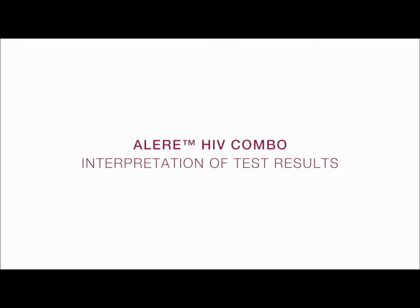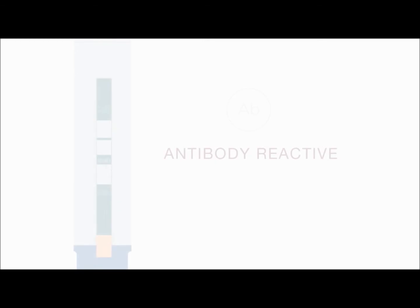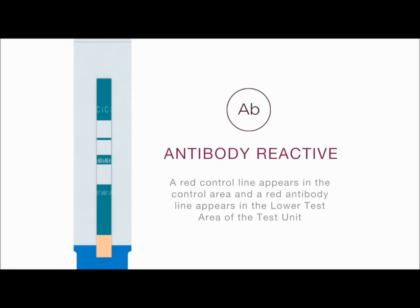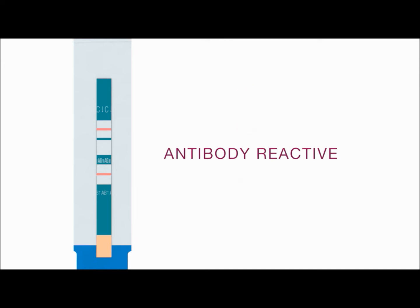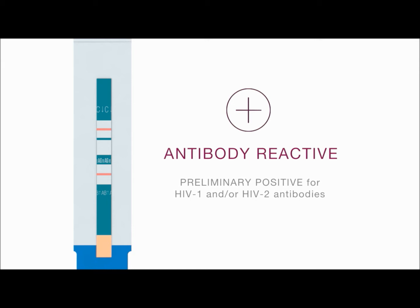Interpretation of test results. Antibody reactive: a red control line appears in the control area and a red antibody line appears in the lower test area of the test unit. The intensity of the antibody and control lines may vary. Any visible red line in both the control and lower test areas, regardless of intensity, is considered reactive. A reactive test result means that HIV-1 and/or HIV-2 antibodies have been detected in the specimen. The test result is interpreted as preliminary positive for HIV-1 and/or HIV-2 antibodies.